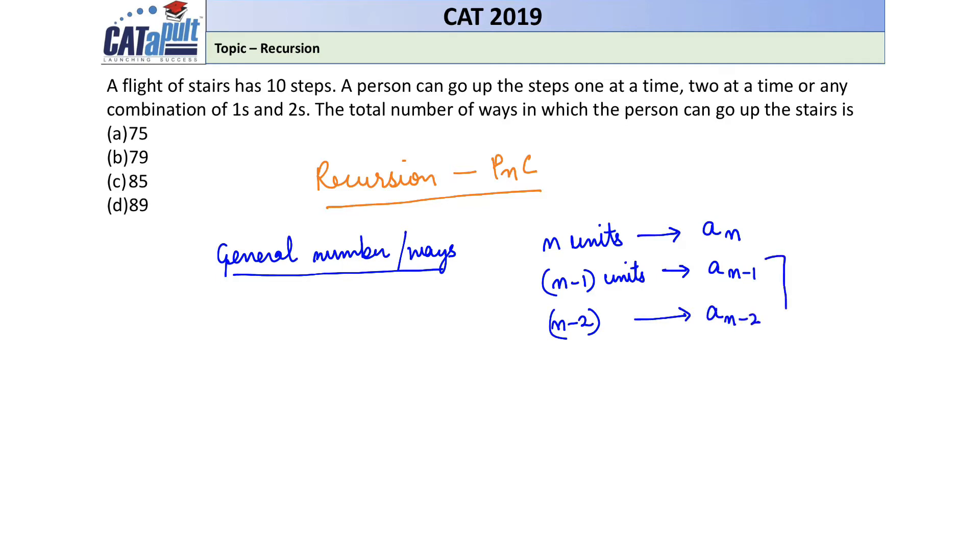Now, all these formulas work when we are in the original condition. When we say n units can be fulfilled in a_n ways, we need certain initial conditions to make this assumption. If we have n-1 units in the original condition, then we can say there are a_{n-1} ways.